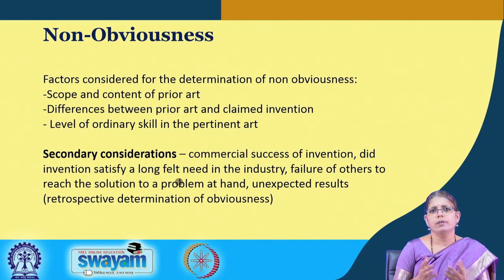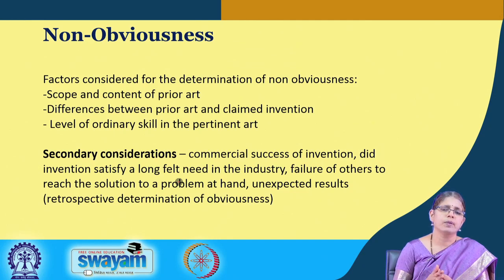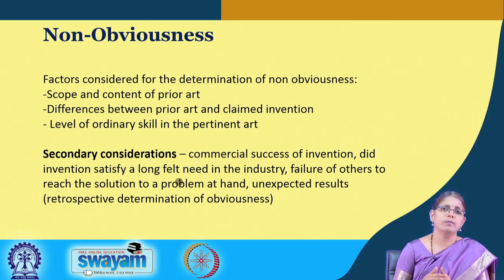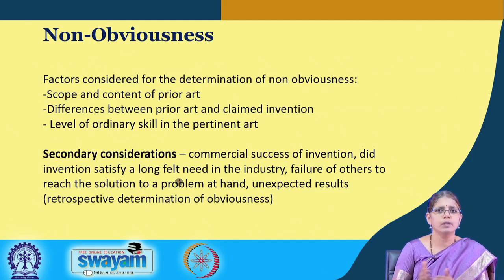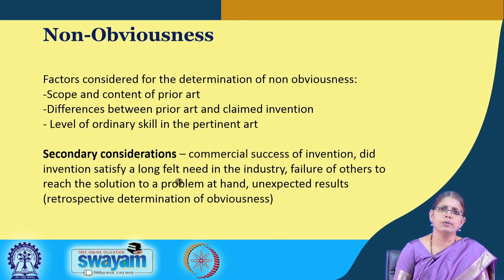Many times when you look at inventions, you have this surprising value — unexpected results. Something known for a particular function has a completely different function which is deciphered. When the compound is not new but its function is totally new, the question is whether it is open for patenting. In some jurisdictions it is not open for patenting, but in others yes it is. Some of these surprising results are also important for consideration in determining the non-obviousness of an invention.